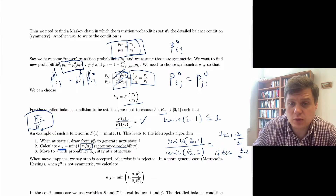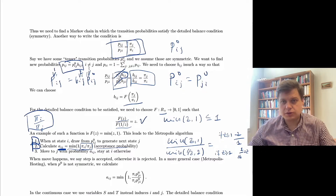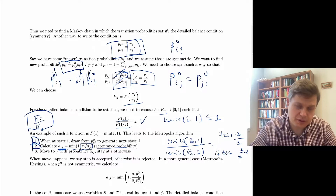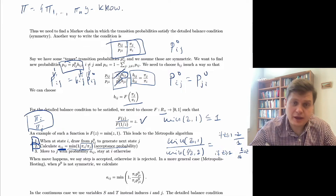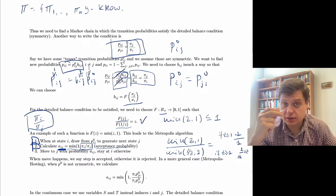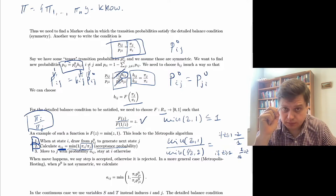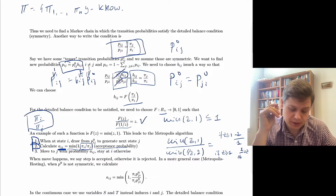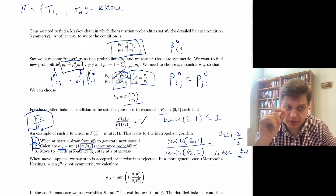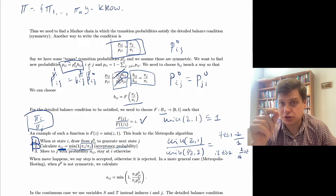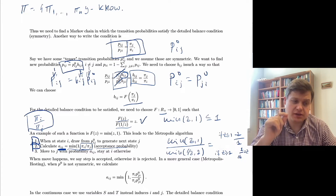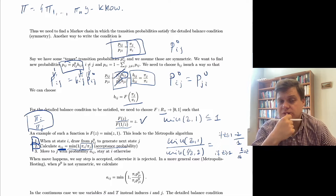We calculate the minimum of one and the ratio of pi_i to pi_j — this becomes the acceptance probability alpha_ij. We move to state j with probability alpha_ij and stay in node i otherwise. In summary: we started with a known limiting distribution pi for each node in the graph, and designed a random walk so that the transition probabilities satisfy the detailed balance equation, guaranteeing that the a priori known distribution pi is the stationary distribution — visiting nodes at frequency proportional to pi.